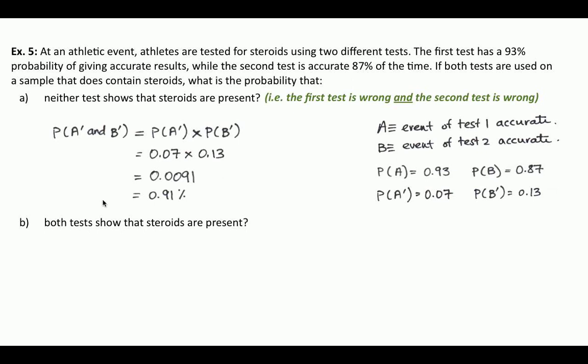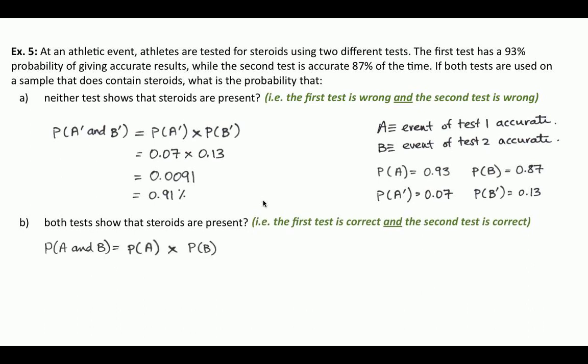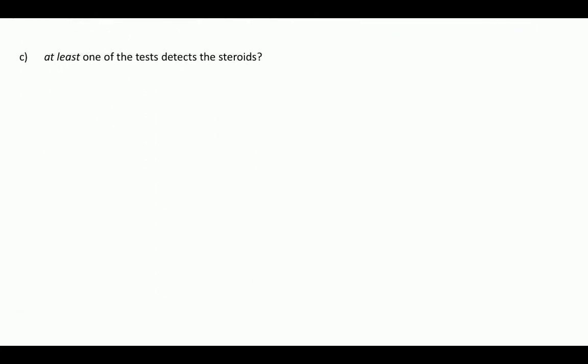Conversely, what's the probability that both tests show steroids are present — that both tests are correct? This is P(A and B) = P(A) × P(B) = 0.93 × 0.87 = 0.8091, about 81%. That's a very high probability that both tests will show steroids are present. But when testing an athlete, we don't necessarily need both tests to show it — we just need at least one.